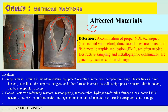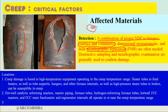How do we detect creep prior to failure? A combination of proper NDE techniques — surface techniques and volumetric techniques — is needed because at the microstructure level we cannot detect damage by visual inspection alone. At the surface and volumetric level, NDTs are used to find initiation of creep, along with dimensional measurement and field metallographic replica. Metallographic replica is very important to check whether micro-crack initiation has been reported.